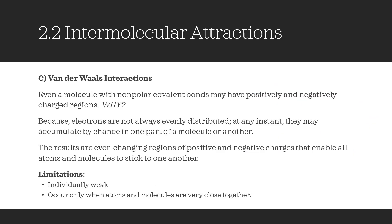Even a molecule with non-polar covalent bonds may have positively and negatively charged regions. Why? Because electrons aren't always evenly distributed. At any instant, they may accumulate by chance in one part of a molecule or another. The result is ever-changing regions of positive and negative charges that enable all atoms and molecules to stick to one another — this is called van der Waals interactions. These interactions are individually weak and occur only when atoms and molecules are very close together. However, when many such interactions occur simultaneously, they can be powerful.